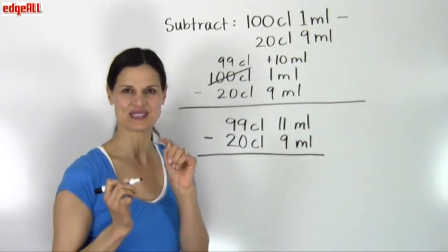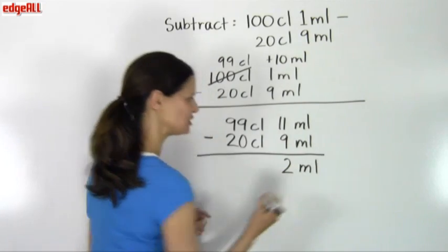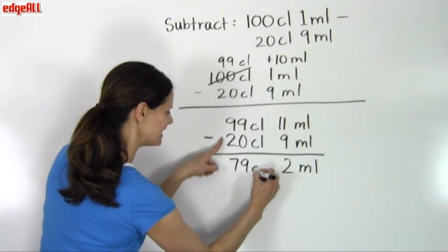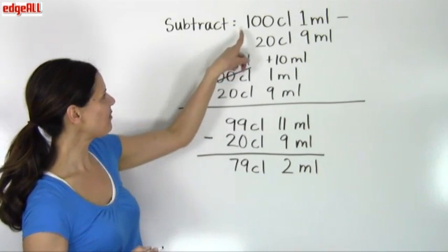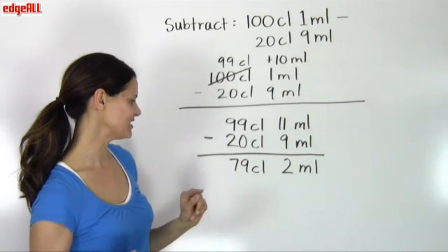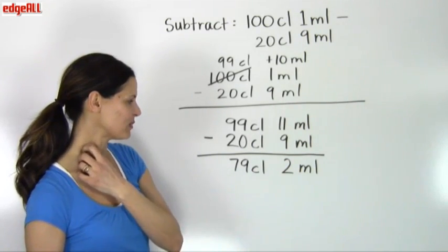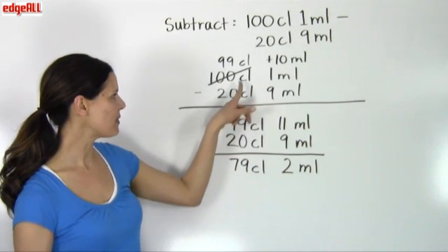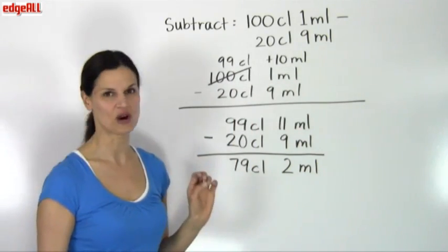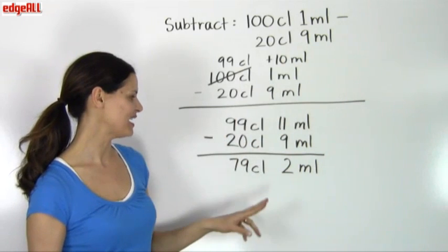Now we can perform the subtraction. 11 minus 9 equals 2, so we have 2 milliliters. And 99 minus 20 equals 79 centiliters. So the answer to 100 centiliters 1 milliliter minus 20 centiliters 9 milliliters is 79 centiliters, 2 milliliters. The key point is that we always borrow from the bigger unit and convert it into smaller units so we can perform subtraction when we're trying to subtract a larger number from a smaller number.